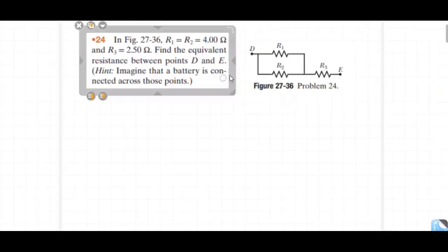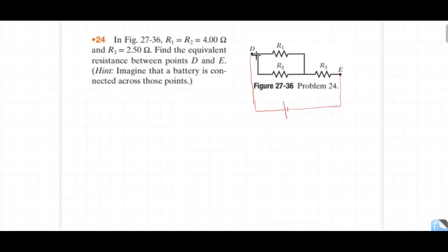Equal resistance between points D and E. D to E from the middle of the connective. There is a battery connected. You see here the junction and the current.